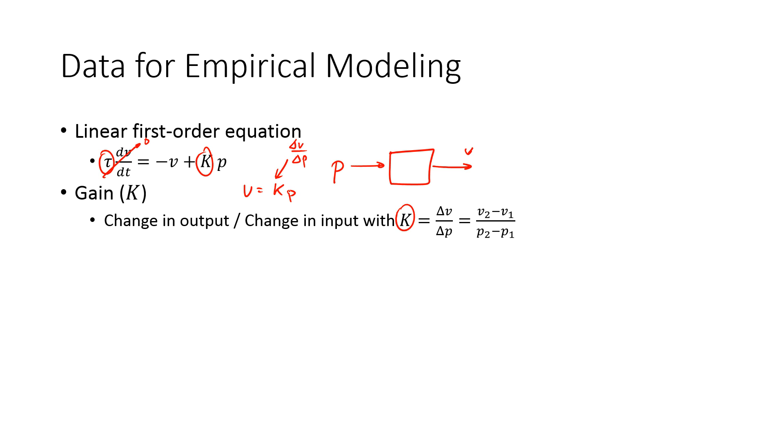So if we have a change in p, we can calculate a change in the value v. Let's say we just start with a value of zero for p1 and v1.